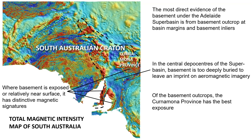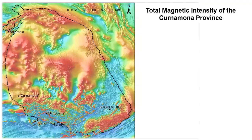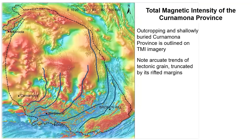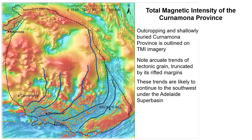Of the basement outcrops, the Curnamona Province has the best exposure, so we'll start with that. The outcropping and shallowly buried Curnamona Province is clearly outlined on total magnetic intensity imagery. We can trace a series of arcuate trends of its tectonic grain, reflected in the fold axes of its metasediments. These trends are clearly truncated at its rifted margins, but are likely to continue in the subsurface to the southwest underneath the Adelaide Superbasin.